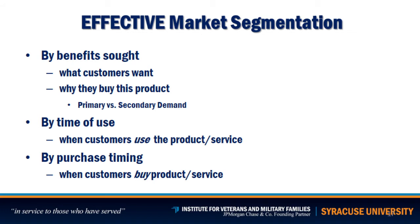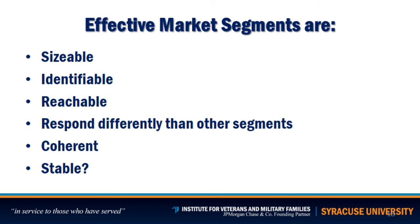You can also segment by time of use — when customers use the product and how often — and by purchase timing. For example, as a government contractor, you need to know when the government entities you're targeting are buying. It is also very important to note that effective market segments are sizable, identifiable, reachable, accessible, and respond differently than other segments. They should be coherent, and their stability varies depending on your industry and what competitors do once you enter the market.